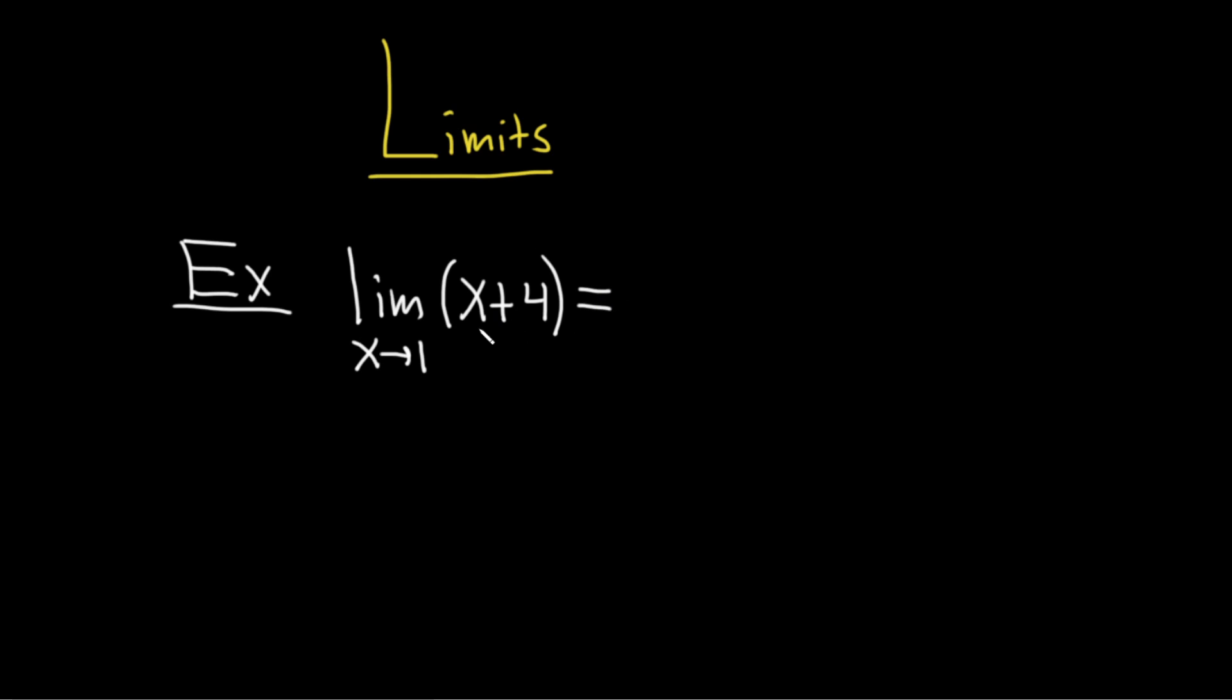So here's the most important rule. If you can take this number and you can plug it in and you actually get an answer, like you get a number, you're done. And whenever you do that, it's really important to drop the limit sign. Now, if you can't plug it in, like if you don't get an answer, then you have to do something else.